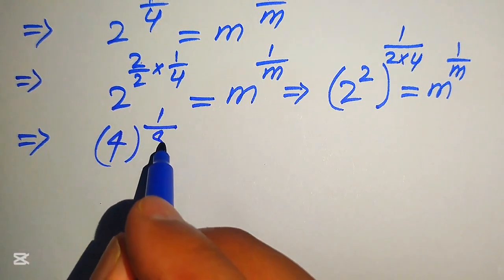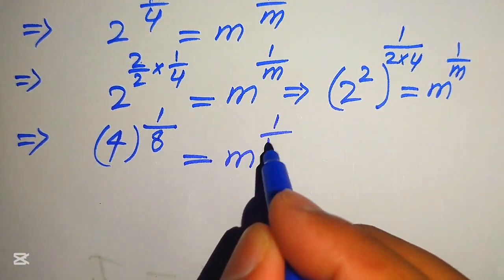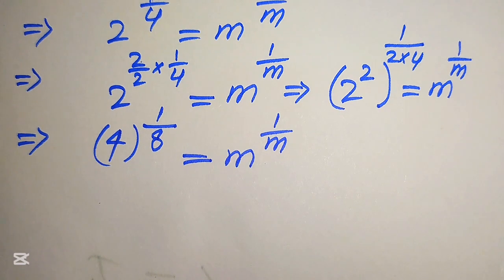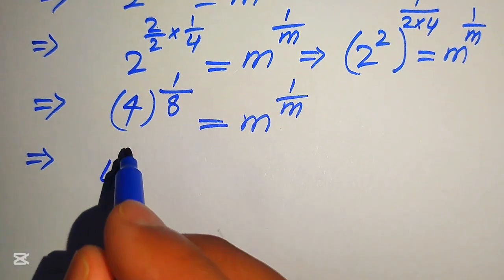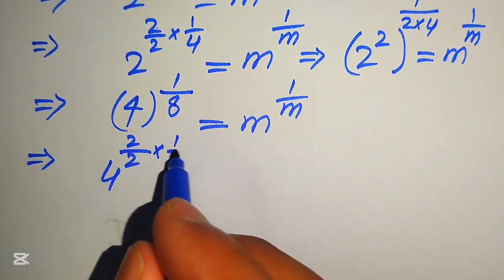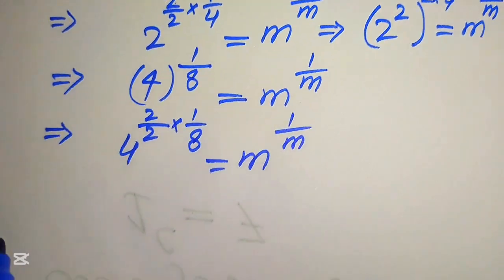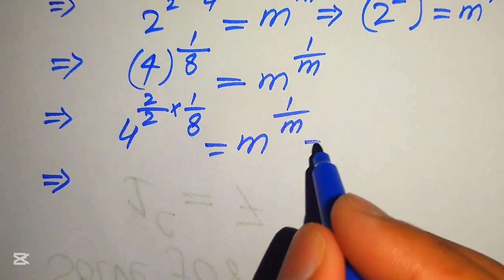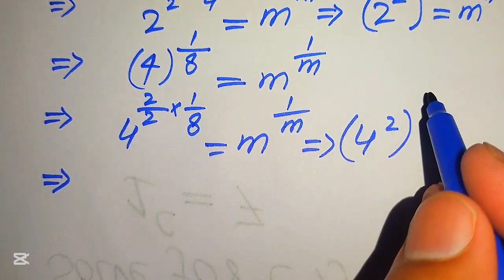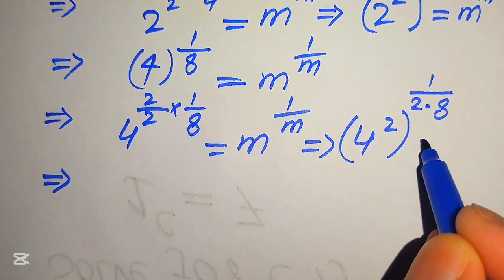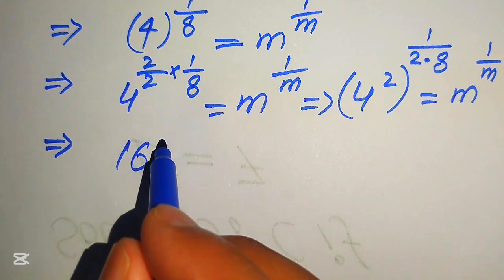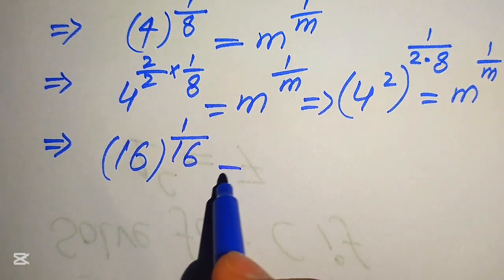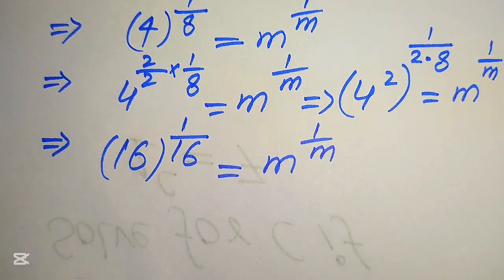So 2 squared becomes 4, and the exponent becomes 1 over 8, giving 4 to the power of 1 over 8 equals m to the power of 1 over m. The exponent is still not the reciprocal of the base, so we repeat the process: multiply and divide the exponent of 4 by 2, move 2 inside, giving 4 squared to the power of 1 over 16. Then 4 squared becomes 16, giving 16 to the power of 1 over 16 equals m to the power of 1 over m.